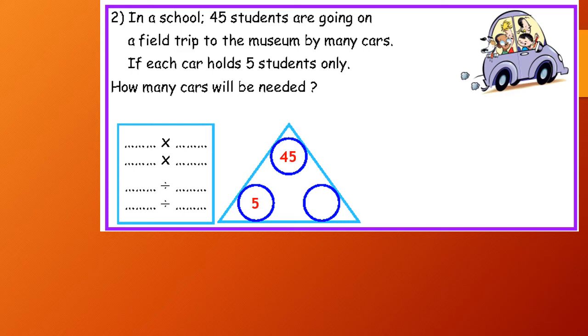So, I have 45 and 5. And the last number will be 9, because 9 by 5 equals 45.